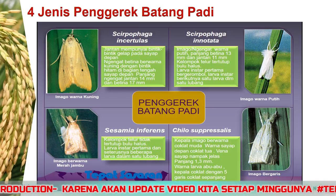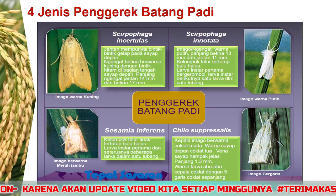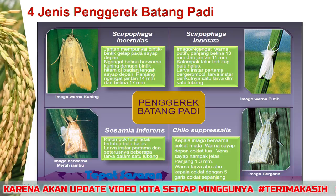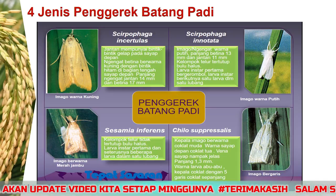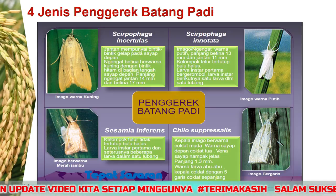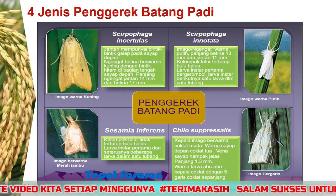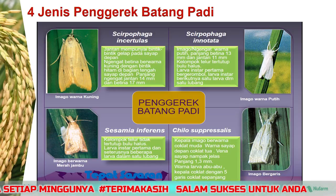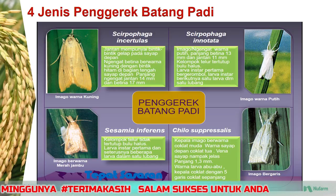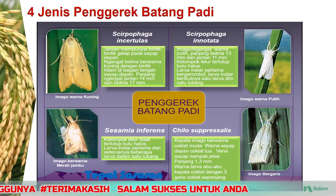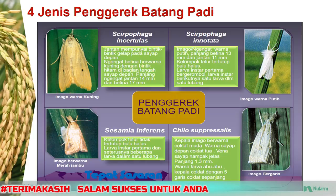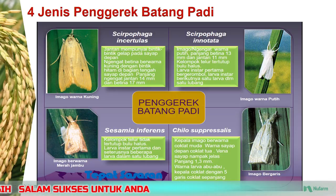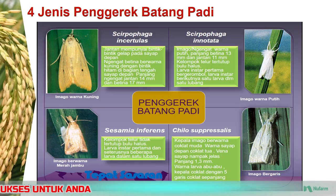Yang kedua, Scirpophaga innotata atau penggerek batang warna putih, dengan ciri imago atau ngengat warna putih, panjang betina 13 mm dan jantan 11 mm. Kelompok telur tertutup bulu halus, larva instar pertama bergerombol, larva instar berikutnya satu larva dalam satu lubang.